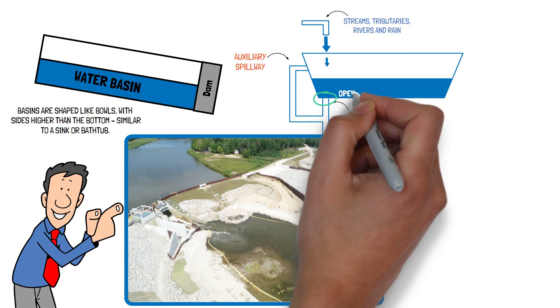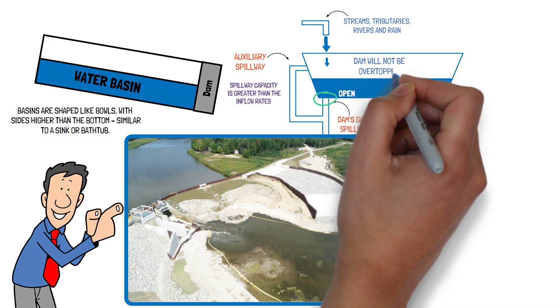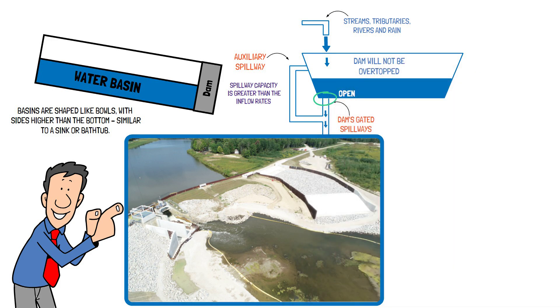If the dam's gates are open and the dam spillway capacity is greater than the inflow rates, the dam will not be overtopped because water is flowing through the dam faster than it enters the lake. If this were reversed and the inflow rates were greater than the dam's capacity, the dam would be overtopped because water is entering the lake faster than it can leave.